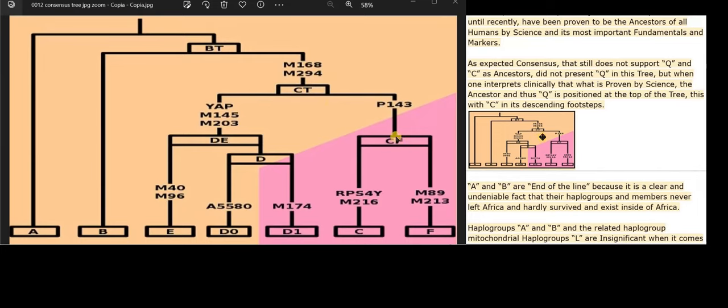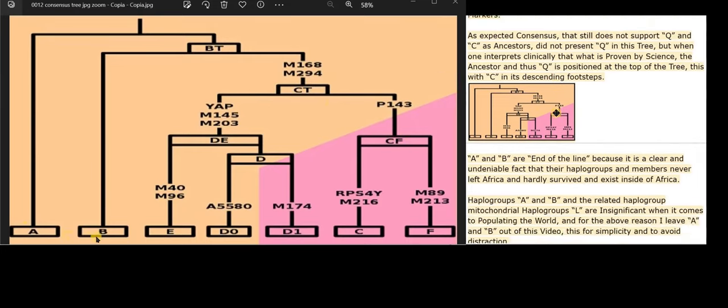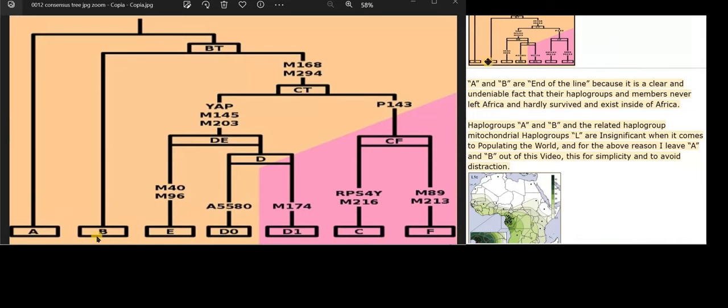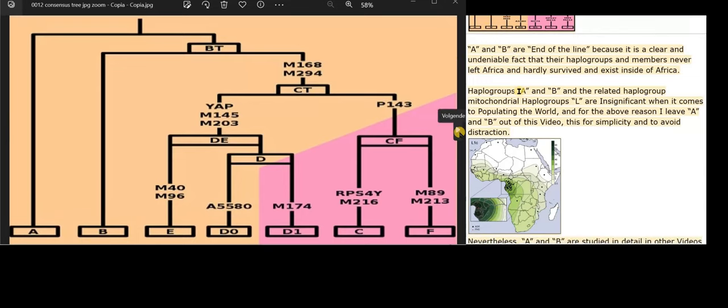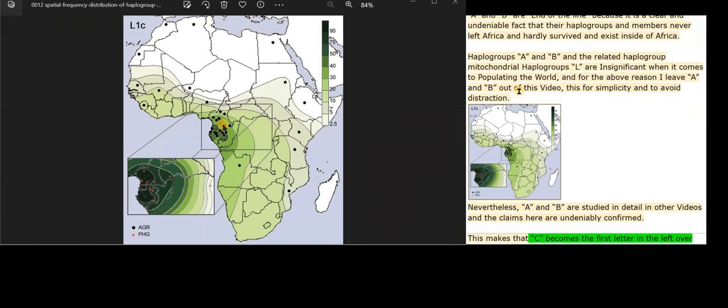A and B are end of the line because it is a clear and undeniable fact that their haplogroups and members never left Africa and hardly survived and exist inside of Africa. Haplogroups A and B and the related mitochondrial haplogroups L are insignificant when it comes to populating the world.